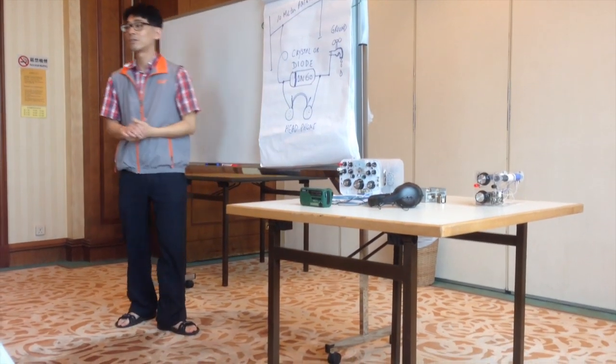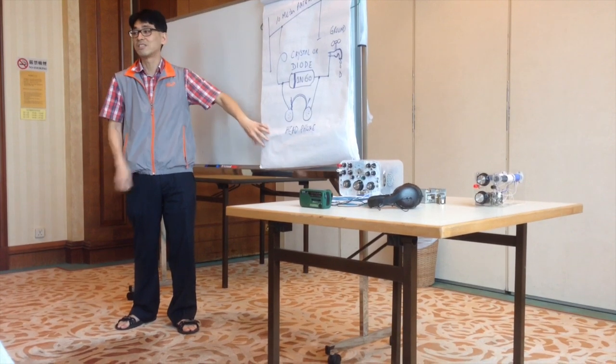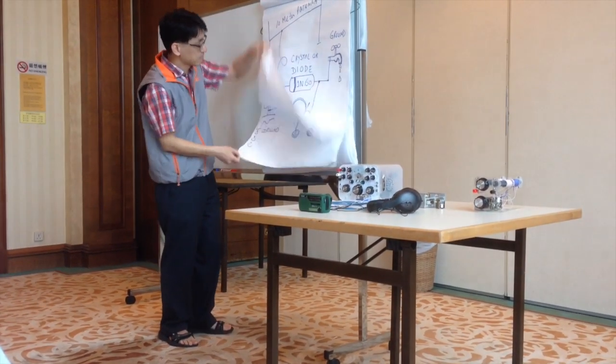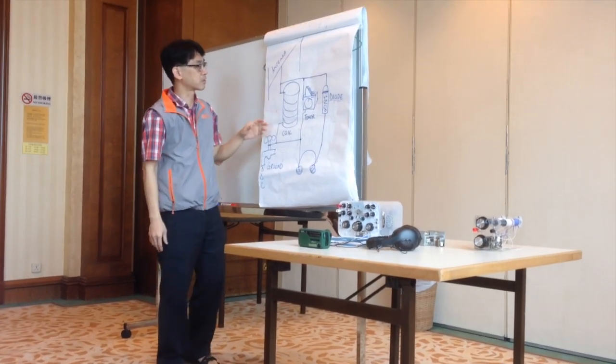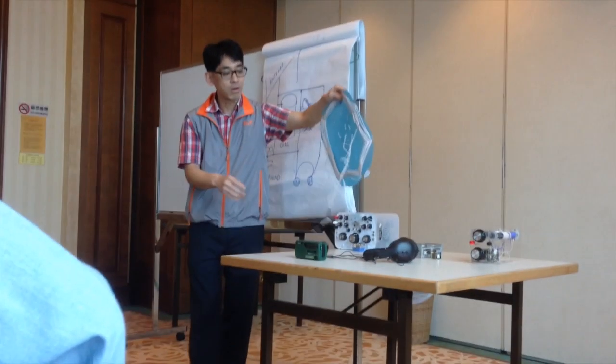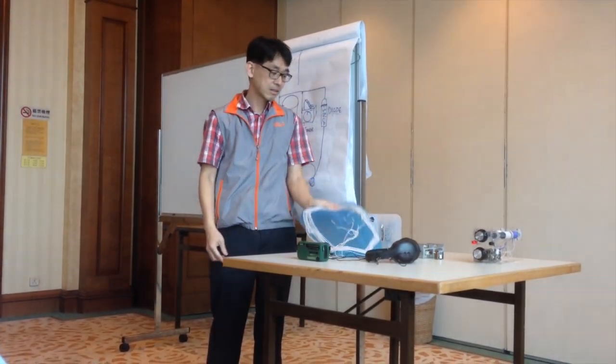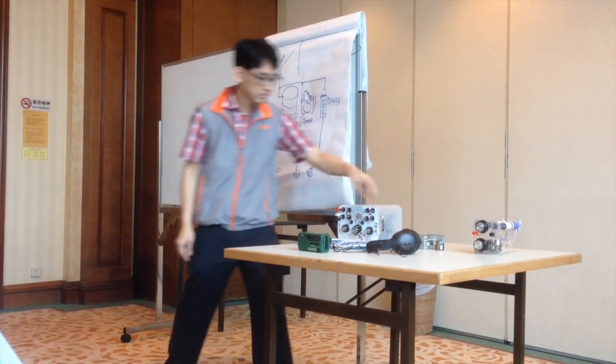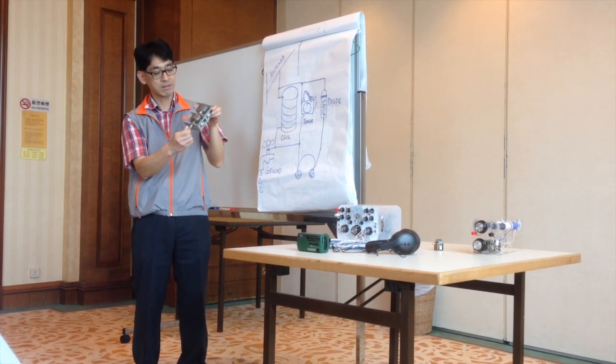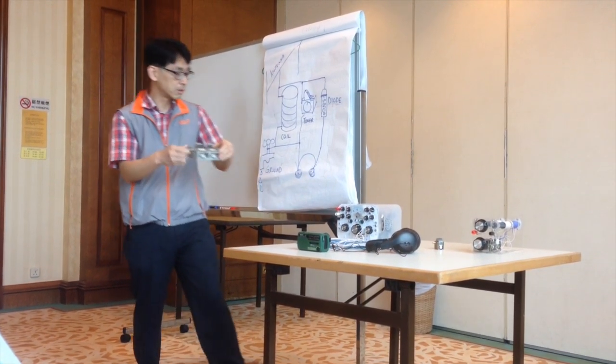This type of radio can only listen to one station because there's no way to tune to different stations. To enable that, you can add two more things. You can add a coil, which is a circle of wires like this one. And you can add a tuning capacitor, something that looks like this. Then you can change the tuning and listen to different stations.